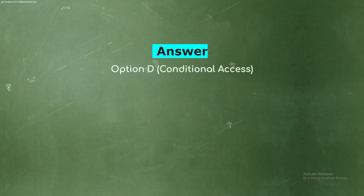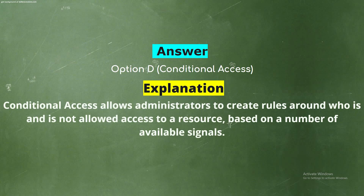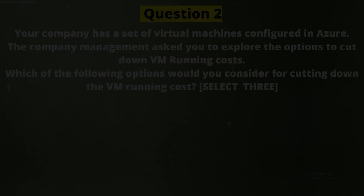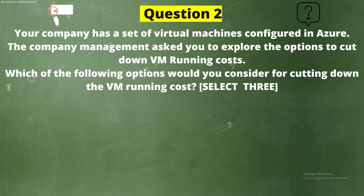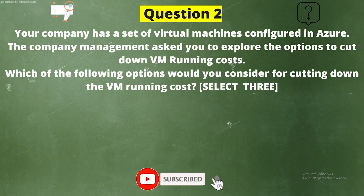The correct answer is Option D - Conditional Access. Explanation: Conditional Access allows administrators to create rules around who is and is not allowed access to a resource based on a number of available signals.